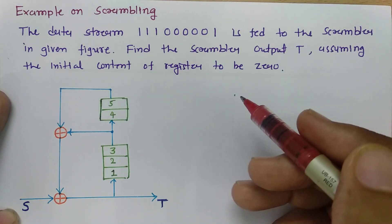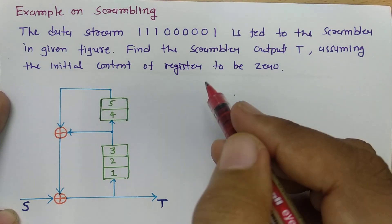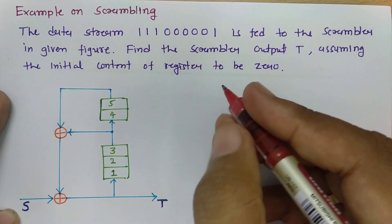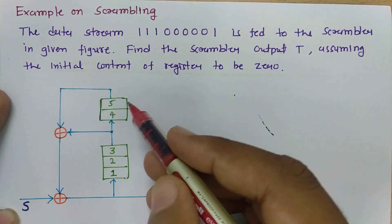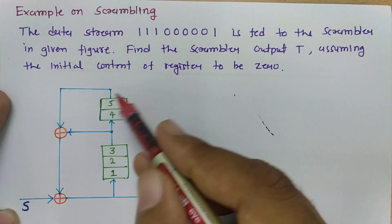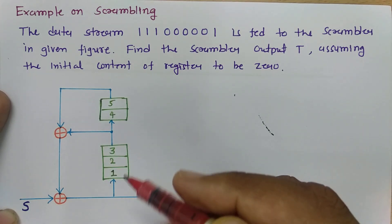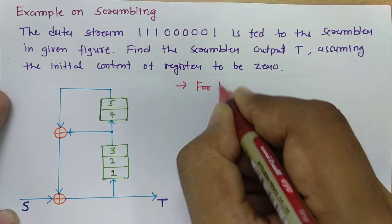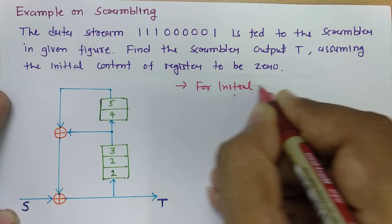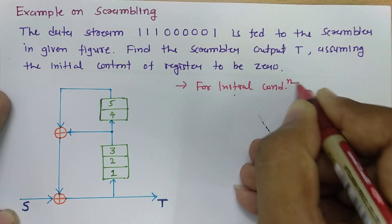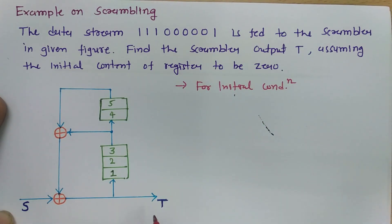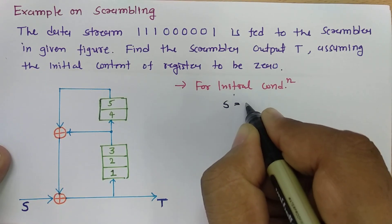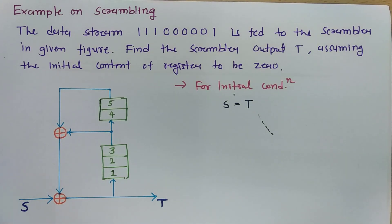Here we are dealing with the assumption that the initial condition of all registers is 0. So if all the bits of these registers are initially 0, then for the initial condition, we can say s is equal to t.